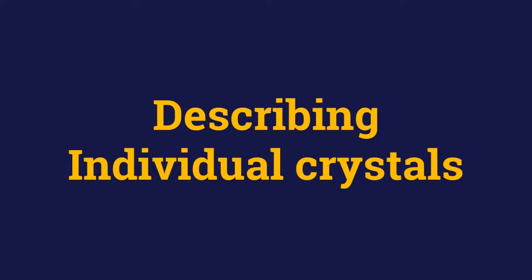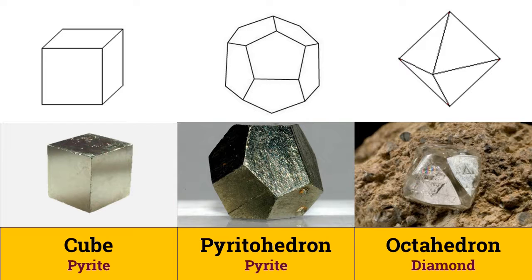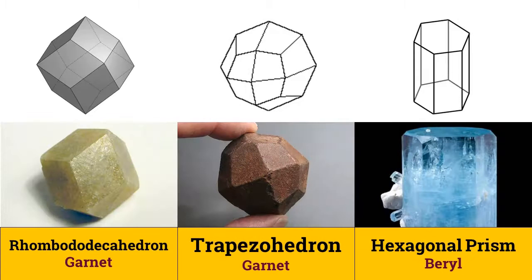Let's start with terms used to describe individual crystals. The most common terms describing a single crystal habit are self-explanatory. Perfect crystals of pyrite are in cubic or pyritohedron form, and diamond crystals are mostly octahedral in shape. Garnet always crystallizes in either rhombododecahedral or trapezohedral shape, and beryl forms in hexagonal prism as shown in the slide. It is very rare to get crystals in these perfect geometric shapes, so mostly they include some deformations, and then the habit may be described through the terms we will see in the following slides.